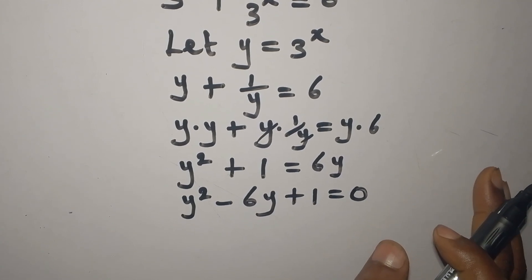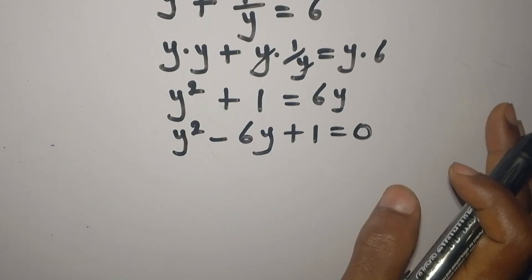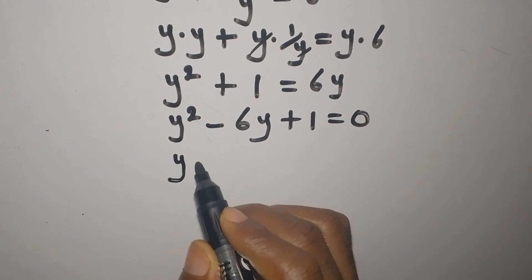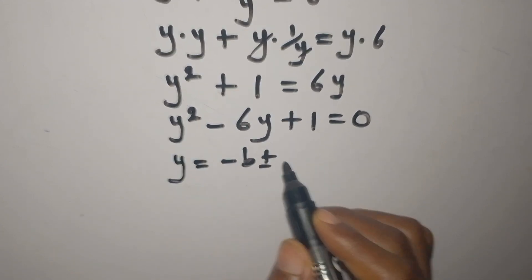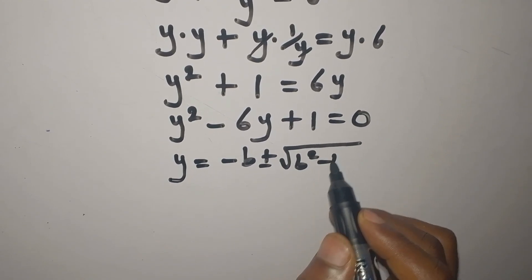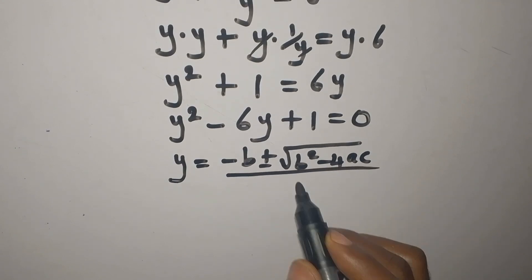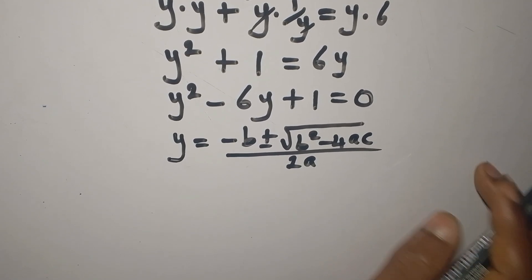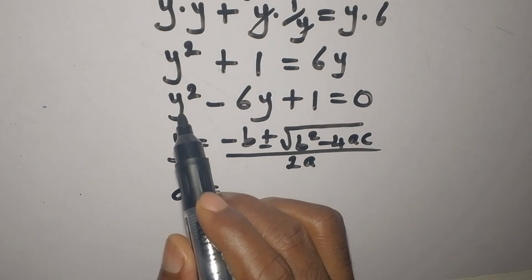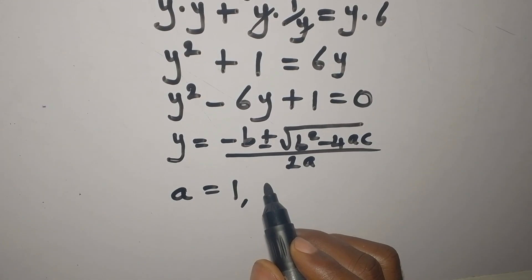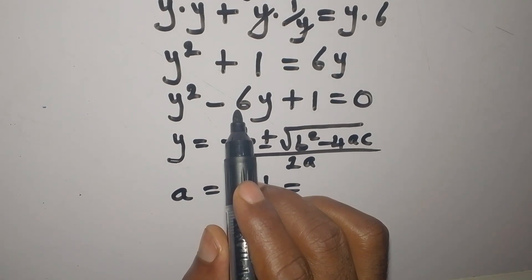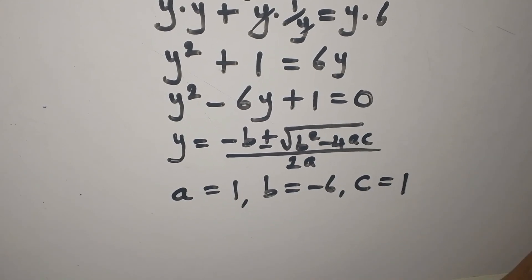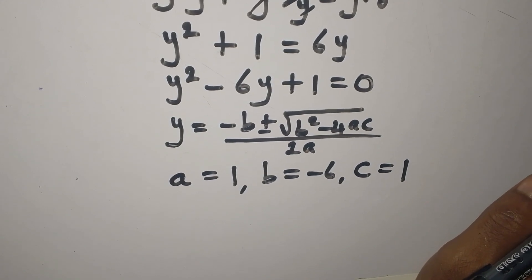We're going to solve this using the quadratic formula: Y equals negative B plus or minus square root of B squared minus 4ac, all over 2a. From our equation, a is 1, b is negative 6, and c is positive 1.